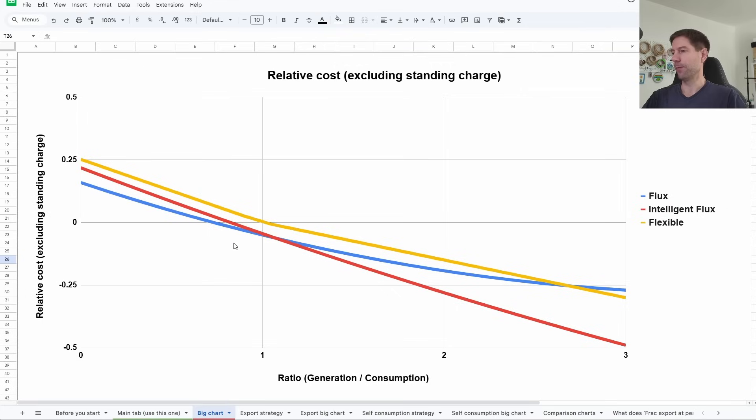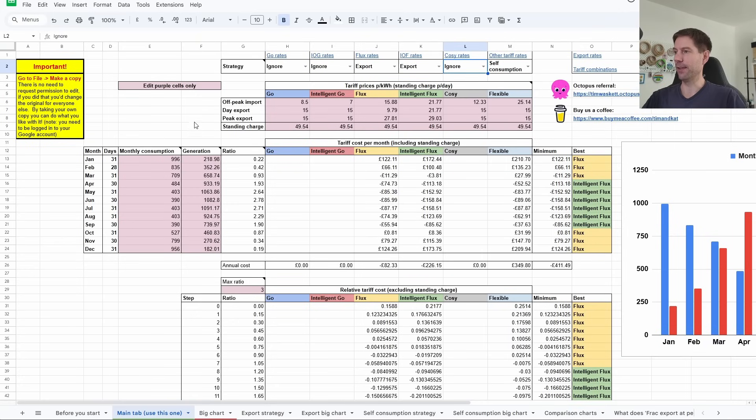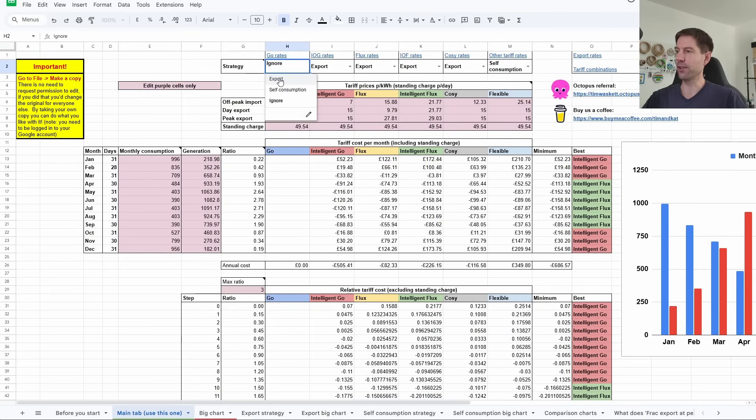You can see from this that Flux is probably the better option as long as you're generating less than you're consuming in a given month, but it very quickly becomes beneficial to move to Intelligent Flux if you're generating more than you consume. At no point is it ever worth sticking with the Flexible tariff. Let's go back to the main page, and I'm going to switch back on all of these three tariffs that I turned off. I'm setting them to the export strategy, and what I mean by export strategy is that you charge up your battery at the cheap rate—whatever the cheap rate happens to be for your particular tariff—and then you export all of your solar out to the grid at the export rate.